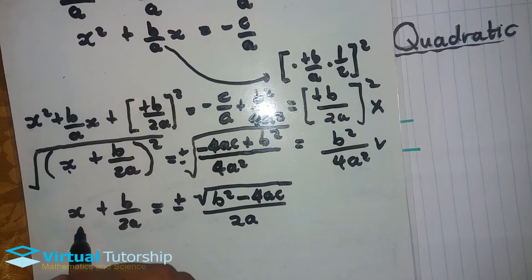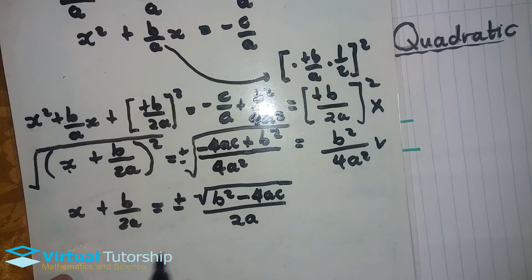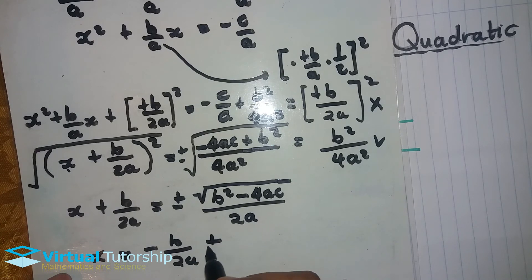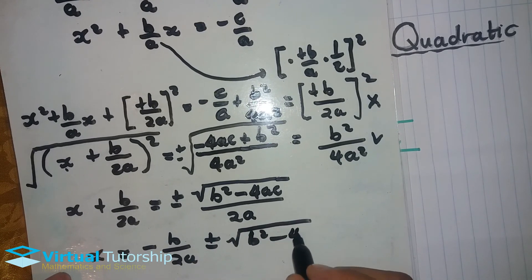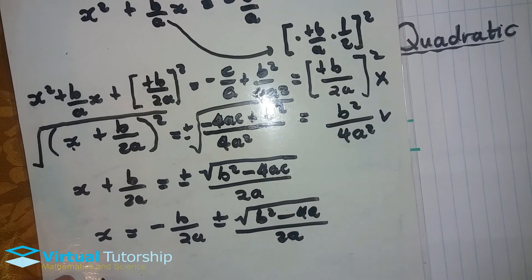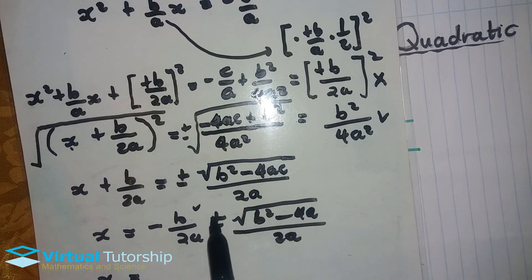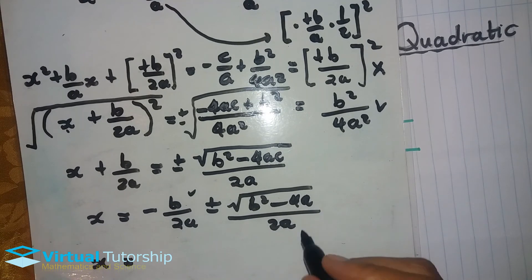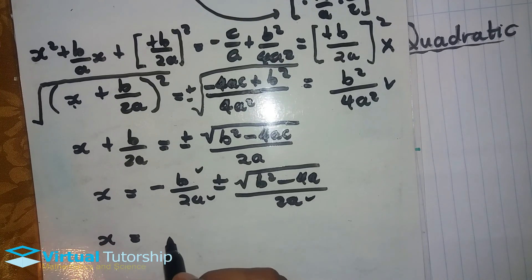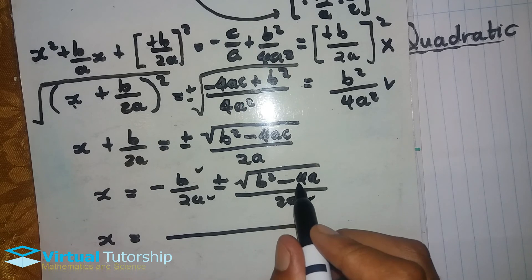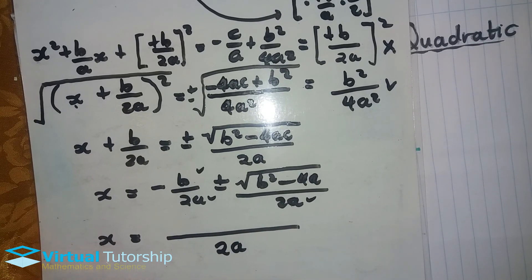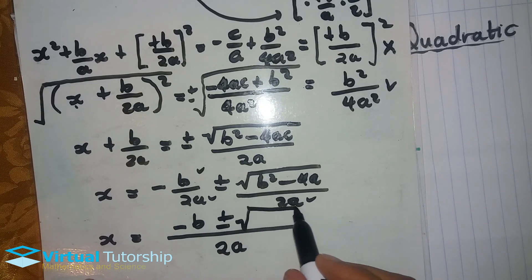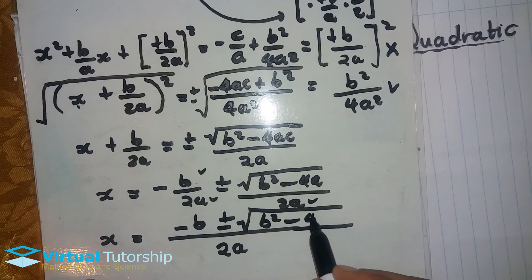I'm solving for x, so I transpose this term to the right hand side. Then I end up with x = -b/2a ± √(b² - 4ac)/2a. These two fractions have the same denominator, so the LCD is 2a. Therefore x = [-b ± √(b² - 4ac)]/2a.